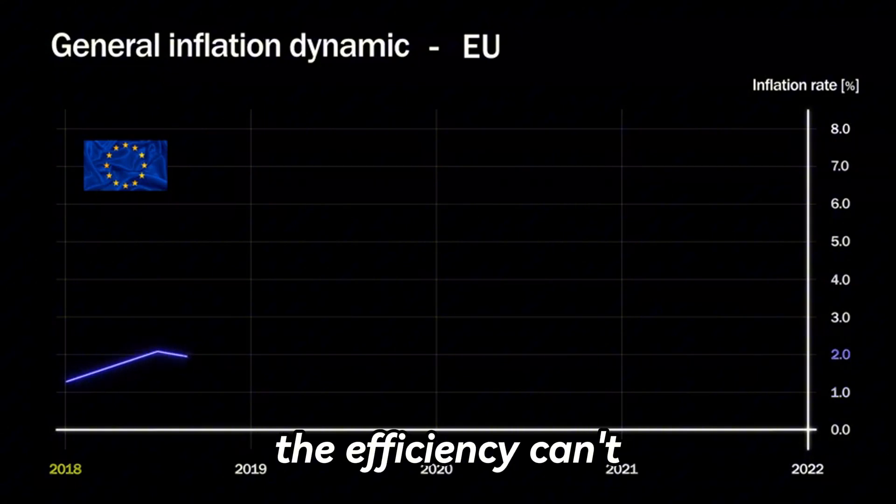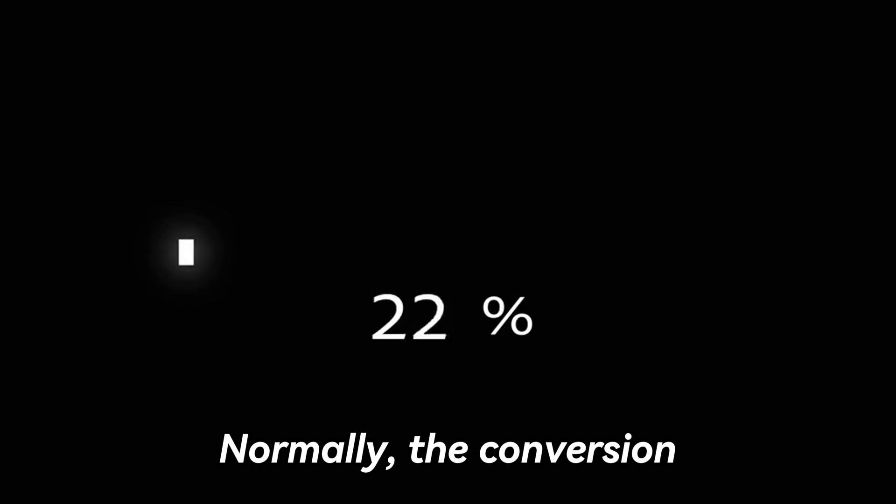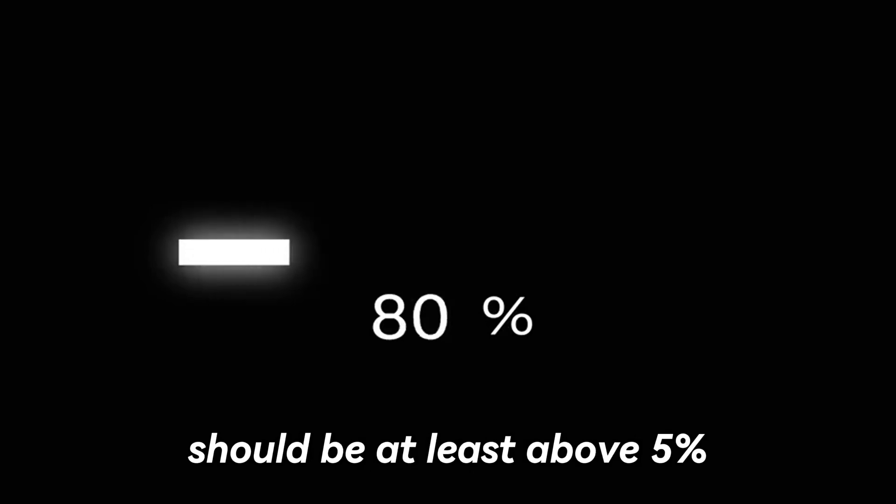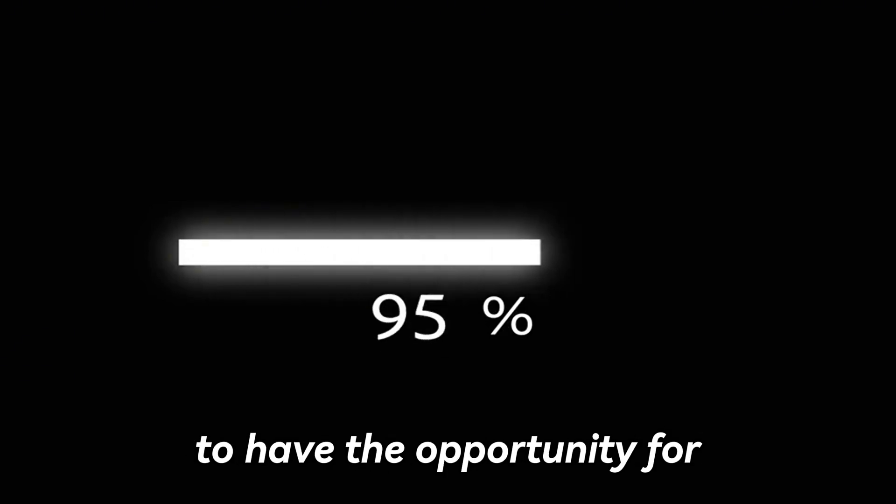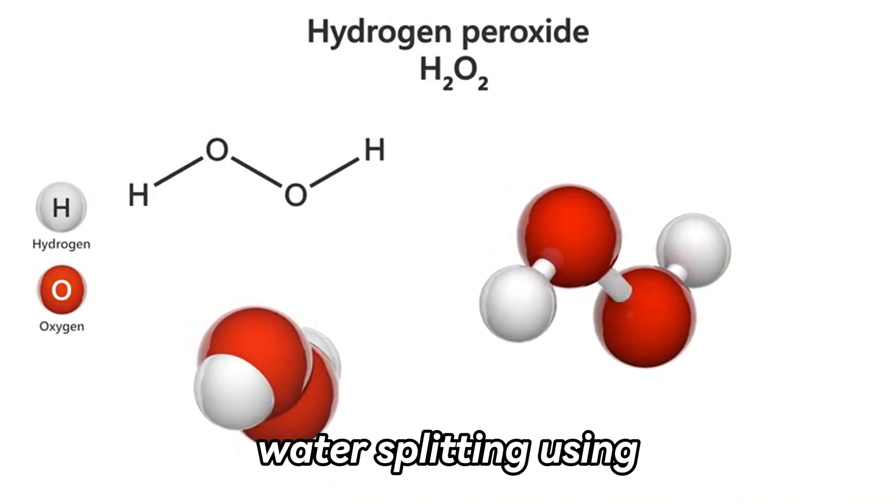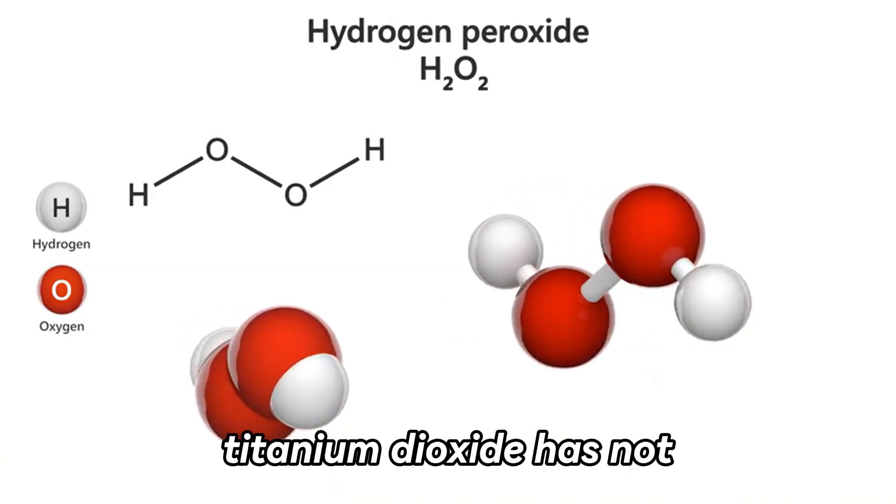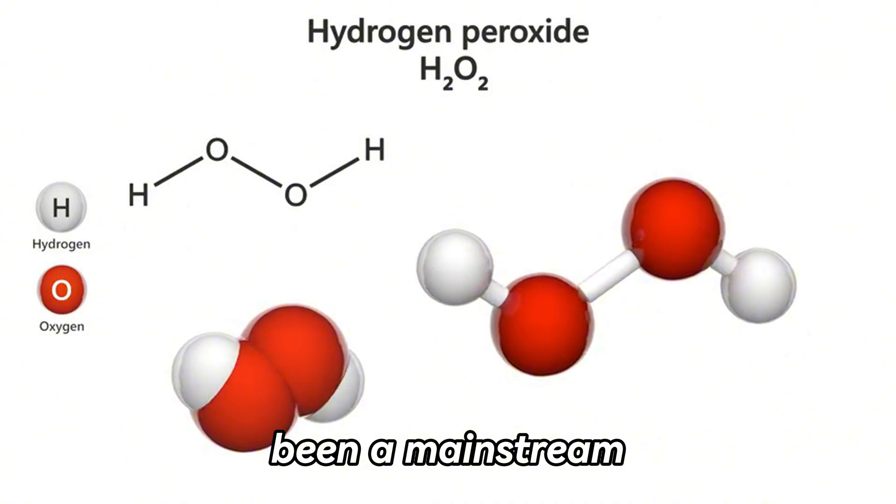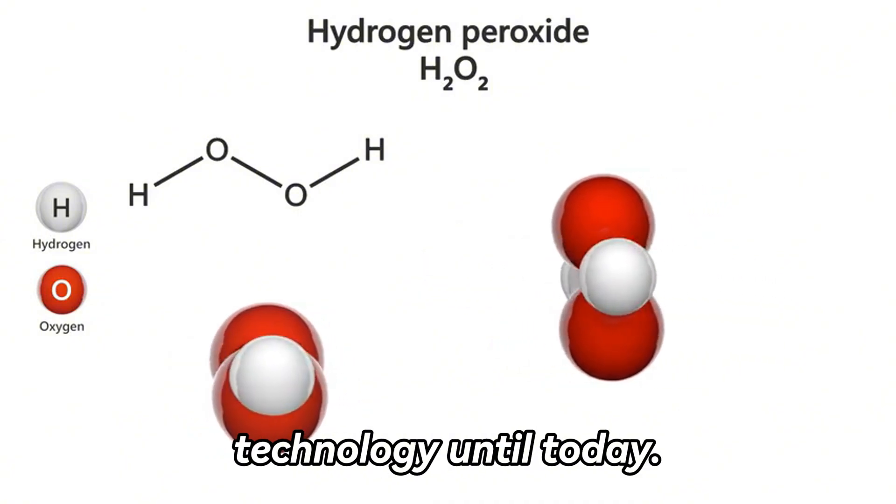Without optimization, the efficiency can't even reach 0.1%. Normally, the conversion efficiency of sunlight should be at least above 5% to have the opportunity for commercial trials and above 10% to be worthy of large-scale promotion. Therefore, photocatalytic water splitting using titanium dioxide has not been a mainstream hydrogen production technology until today.